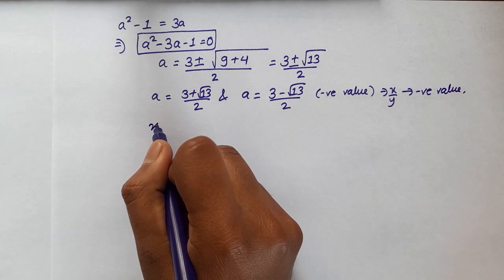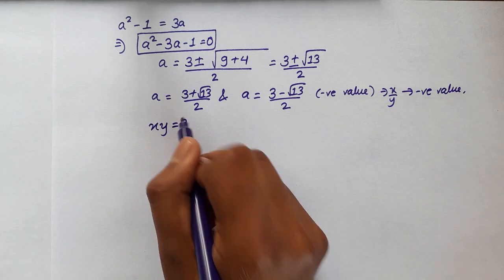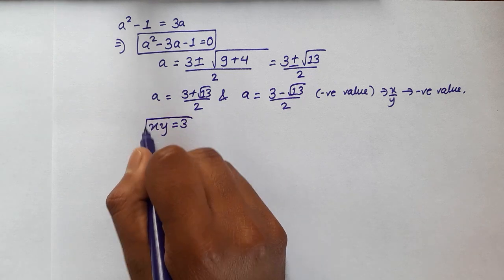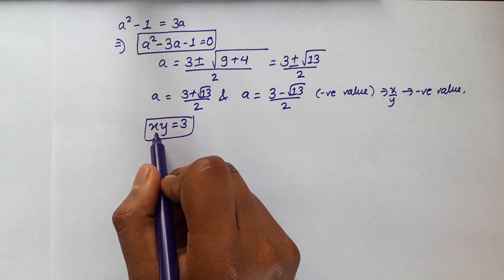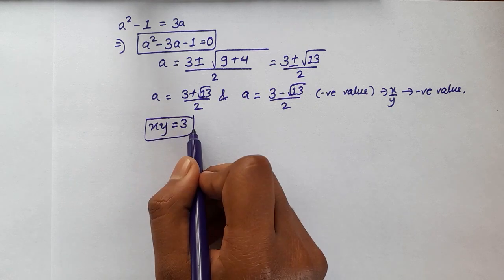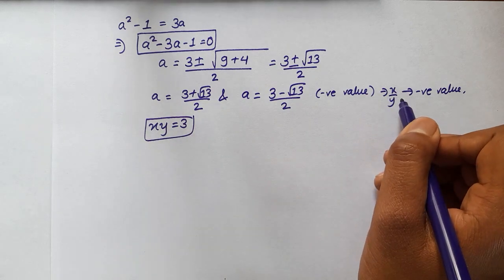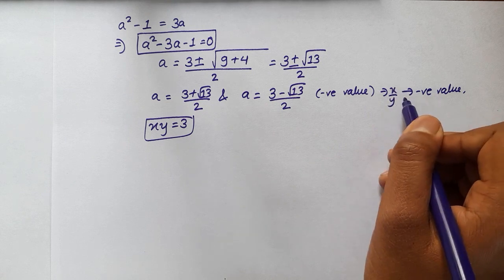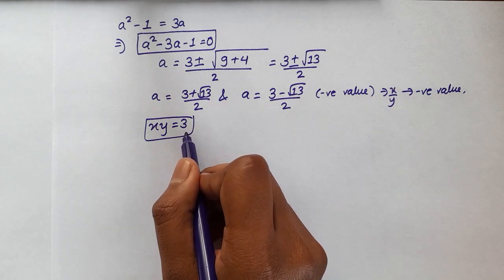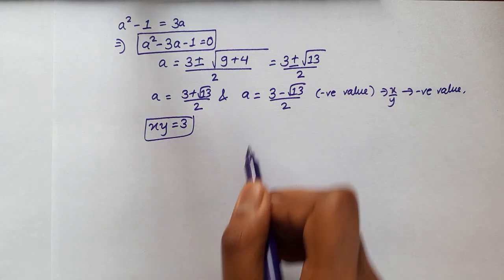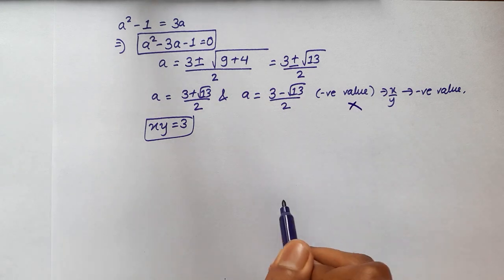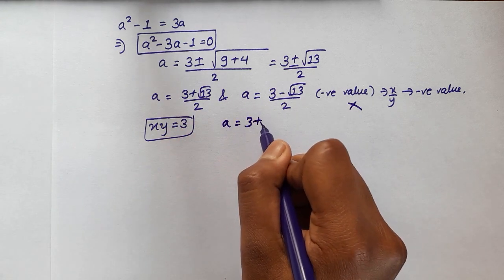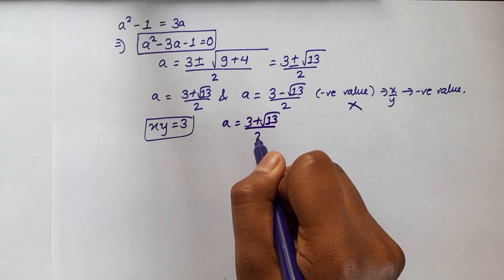But according to the question we have xy is equal to 3. And for this to happen both of them should be of the same sign. Both of them should be either positive or both of them should be either negative. If any one of them happens to be a negative value then this should also give a negative value. But that's not the case. So a cannot be a negative value. So we will cancel out this possibility and go with a is equal to 3 plus root 13 over 2.